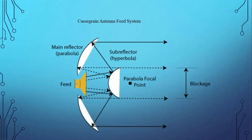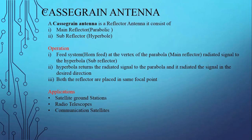Now we go to the principal operation of this antenna. The horn feed reflects the signal to the hyperbola reflector, and the hyperbola reflector reflects the signal to the parabola reflector. Then the parabola reflector diverges the signal in the desired direction as parallel rays, producing a very strong signal.